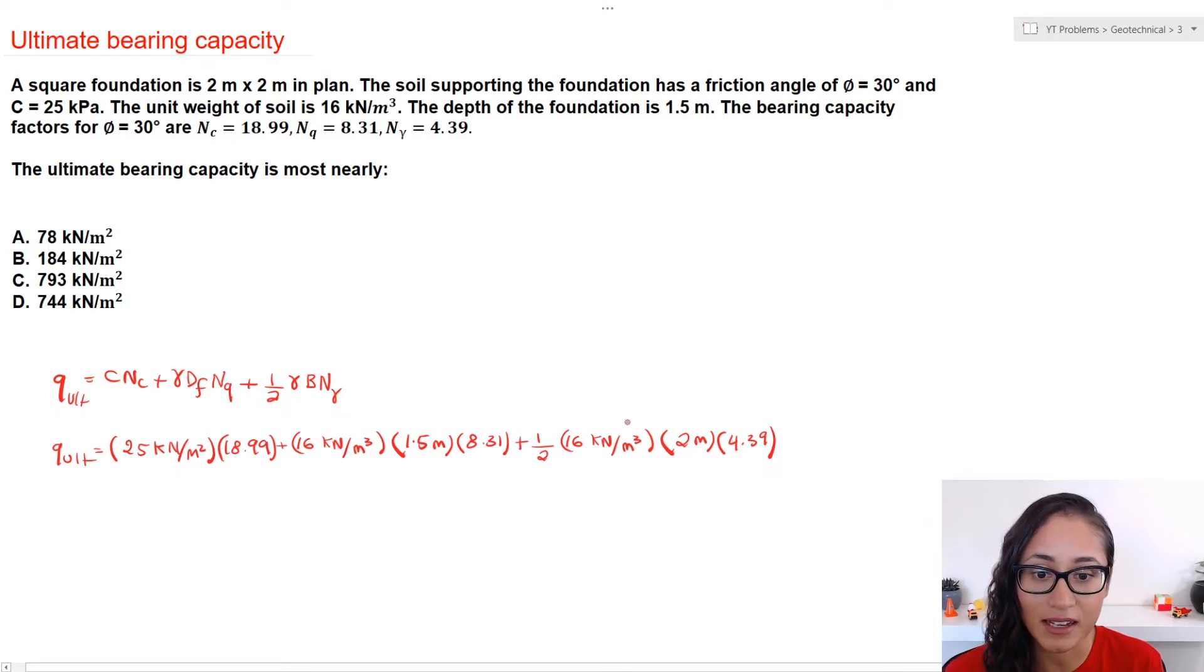And then here again, I used gamma as well. And then for the width of the foundation is 2 meters, since this is a square foundation. So B is going to be equal to 2. Also note guys that the units here are going to cancel. So meters with cubic meters, and we're going to be left with meters squared here, nothing really here. And then here, same thing. So here we have meters squared.